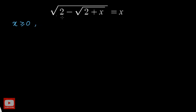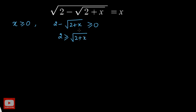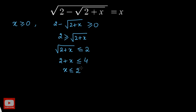The second condition is that any term inside the square root has to be positive if we want a real number result. So 2 minus square root of 2 plus x must be greater than or equal to zero. Rearranging, we get square root of 2 plus x less than or equal to 2. Squaring both sides gives 2 plus x ≤ 4, so x must be less than or equal to 2. That is the second condition.